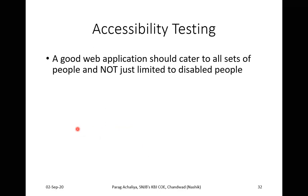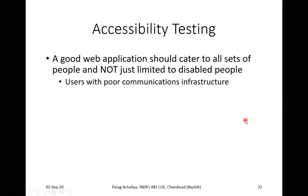A good website or web application should cater to all sets of people, and not just be limited to disabled people. When we test a web application or any system, we should not focus only on disabled people — we should consider all types of users. This means users with impairments as well as users who do not have any impairment, that is normal users. So the system should be tested for both normal and abnormal users.